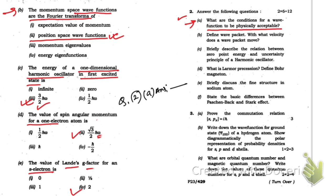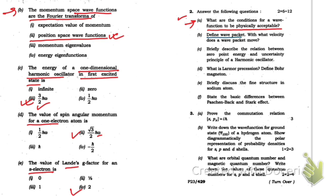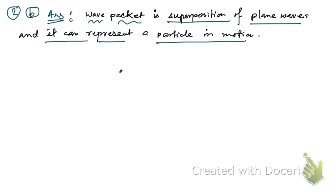Question 2b: Define wave packet and with what velocity does a wave packet move? A wave packet is the superposition of plane waves. In quantum mechanics, a wave packet can represent a particle in motion — for example, small particles like electrons and protons have waves associated with them. A wave packet is essentially a group of waves formed by the superposition of plane waves.